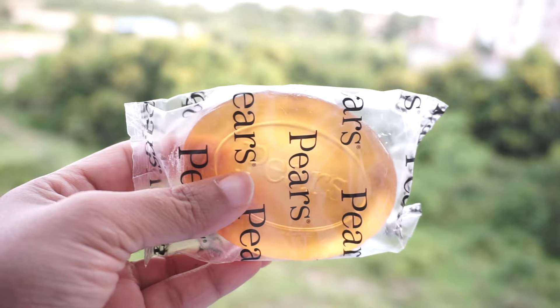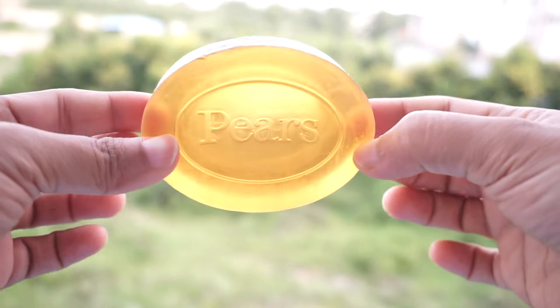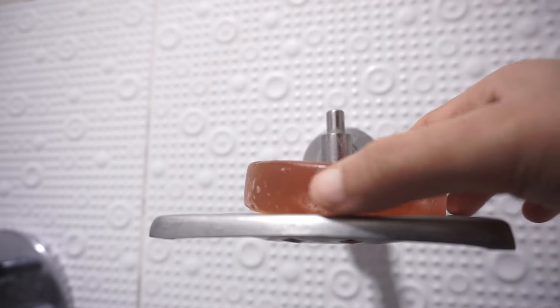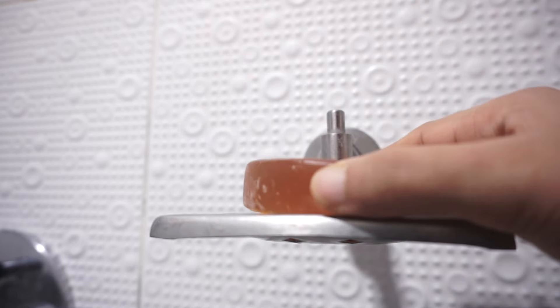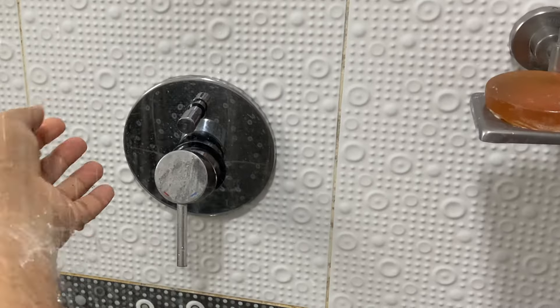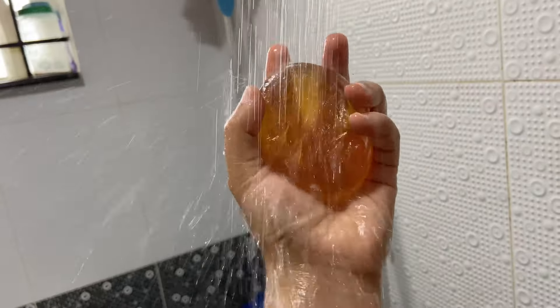Pears Transparent Soap is a British brand of soap, first produced and sold in 1807 by Andrew Pears. It was the world's first mass-market translucent soap. The clarity of the soap gave it a novel transparent appearance, which provided a marketing advantage. To add to the appeal, Pears gave the soap an aroma reminiscent of an English garden.